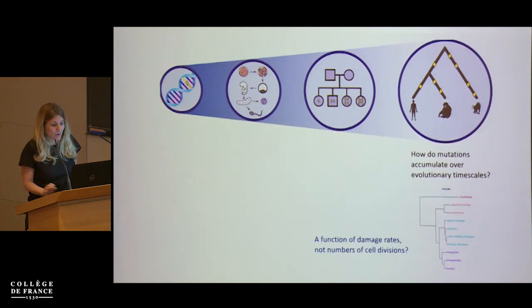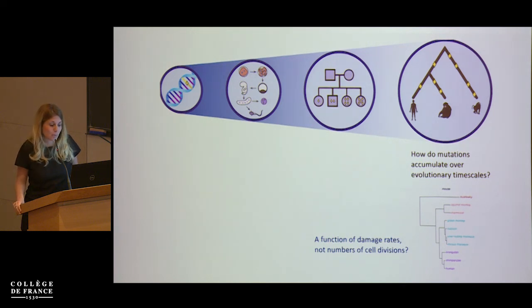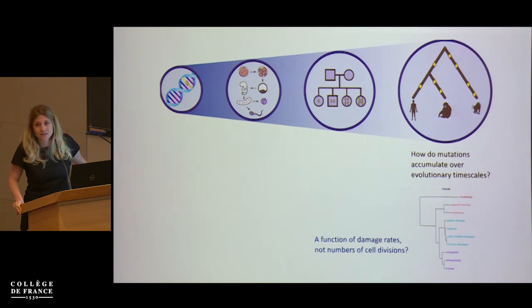The real questions concern how mutations accrue in development — this is where the gap in our understanding lies. There isn't a mutation rate per generation; there's a mutation rate at a given maternal and paternal age. And I want to leave you with one more puzzle: how mutations accumulate over evolutionary time scales. Many of us assumed this clearly reflected reproductive ages, but I'd argue it may actually be something that co-varies with reproductive ages, like damage rates or metabolic rates.